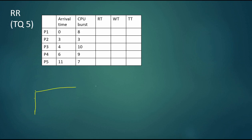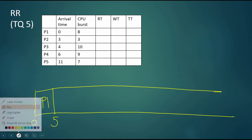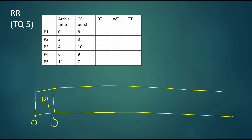This is our Gantt chart. We start at time zero, and since it's first come first serve, we start with P1, which arrived first. P1 has a CPU burst of eight, so it will be given five time units on the CPU. At time five it will be preempted and go back into the ready queue with three time units of CPU burst left.